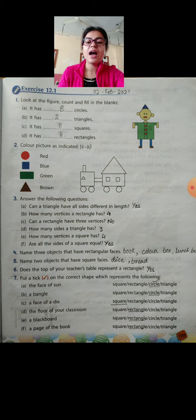How many sides does a triangle have? 3 sides. How many vertices does a square have? 4. Are all the sides of a square equal? Yes. All sides of a square are equal.